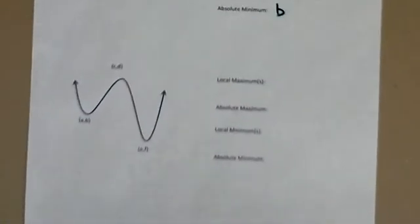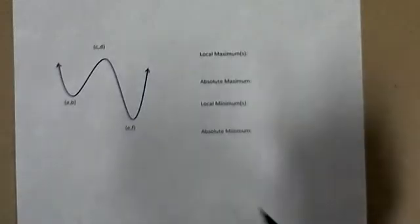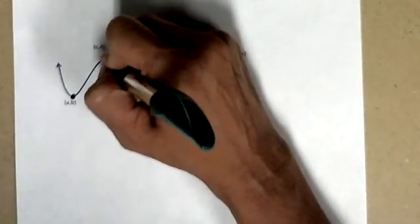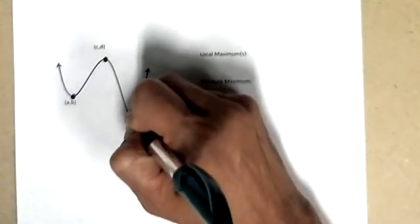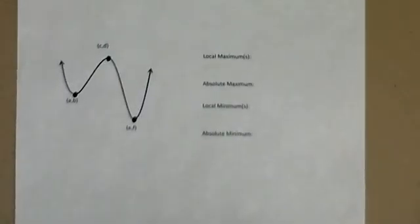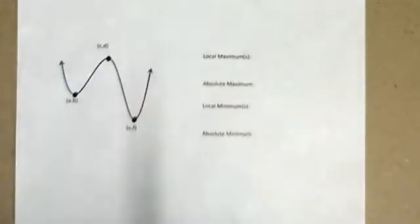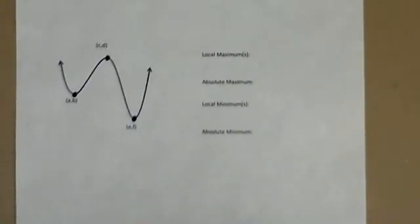Okay, so let's do one more example. So here's a different graph, and now I only have three points labeled. I have a, b down here, c, d up here, and e, f down here. And you'll notice I have arrows on the endpoints of my graph. That's important. Okay, so let's take a look.